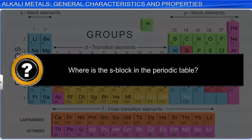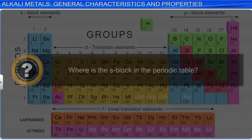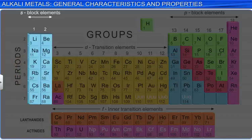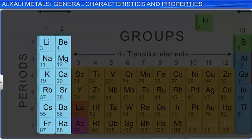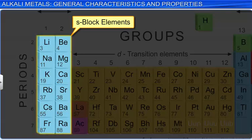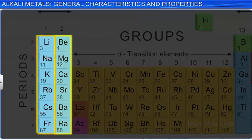Where is the s-block in the periodic table? It's the first two columns or groups of the periodic table. This region is sometimes referred to as the s-block because all the outermost electrons of these elements will occupy the s-orbital. There are two columns in the s-block because an s-orbital can hold a maximum of two electrons.